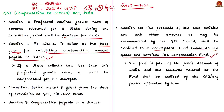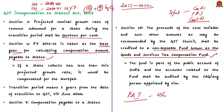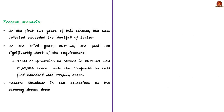This GST Compensation Fund is part of the Public Account of India. We know there are three important funds: the Consolidated Fund of India, Public Account of India, and Contingency Fund of India. Viewers, here is a question: under which article of the Indian Constitution is the Public Account of India set up? Post your answers in the comment section. In the first two years of the scheme, the cess collected was much higher than the shortfall of the states.